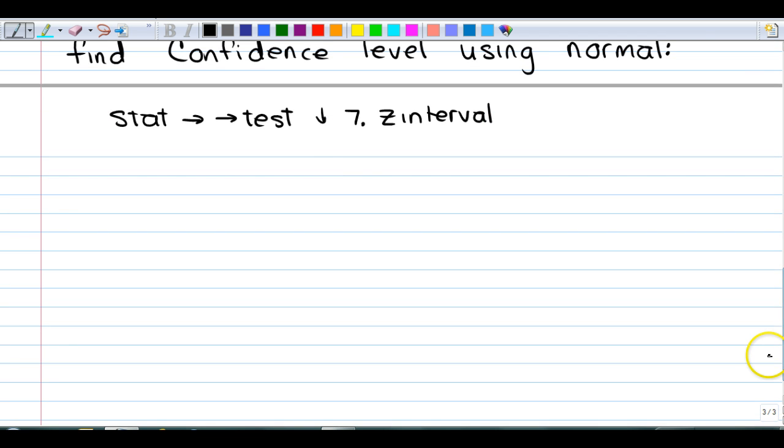Now when we get there, we have our choice. Our input could be data in a table, so it would have to have been entered in a list, and we remember how to enter a list. Or, we could just have the statistics. The sample mean, the standard deviation, etc.